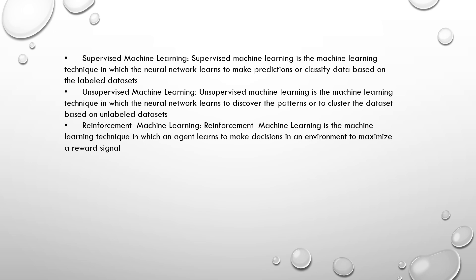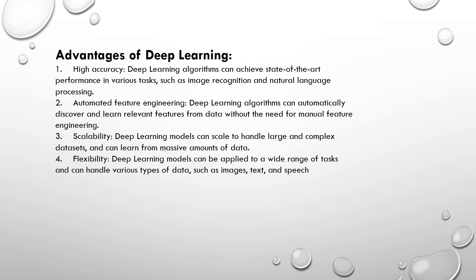Some advantages of deep learning: first, high accuracy. Deep learning algorithms can achieve state-of-the-art performance in various tasks such as image recognition and natural language processing. Second, automated feature engineering. Deep learning algorithms can automatically discover and learn relevant features from the data without the need for manual feature engineering.